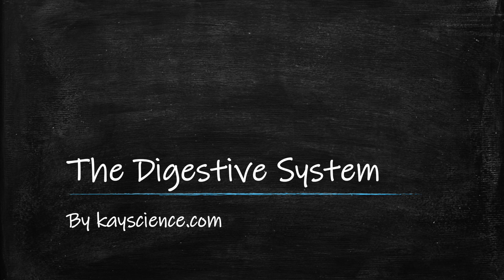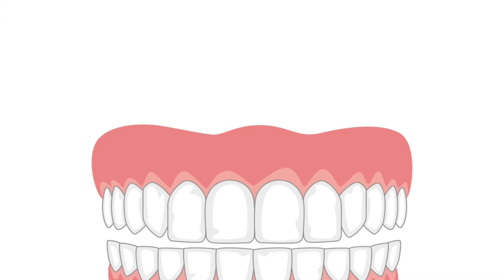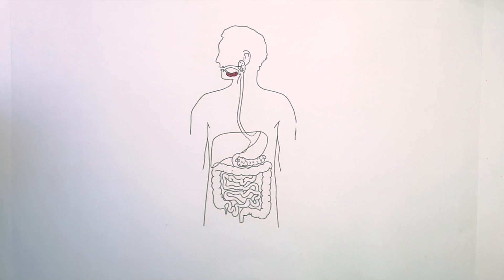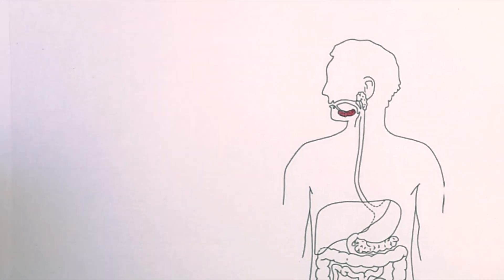The Digestive System of Humans by kscience.com. When you put food in your mouth, your teeth begin to break down the food into smaller pieces. The mouth breaks down food from larger to smaller pieces using the teeth.